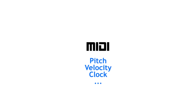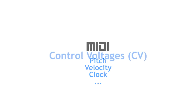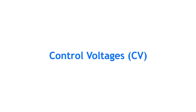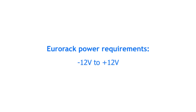MIDI signals contain digital pitch data, velocity data, clock, etc., which have to be converted to analog control voltages, or short, CV. CV is any kind of signal that is used to control your modular synth. The Eurorack system receives electricity from minus 12 to plus 12 volts, so the range of CV is also minus 12 to plus 12 volts.